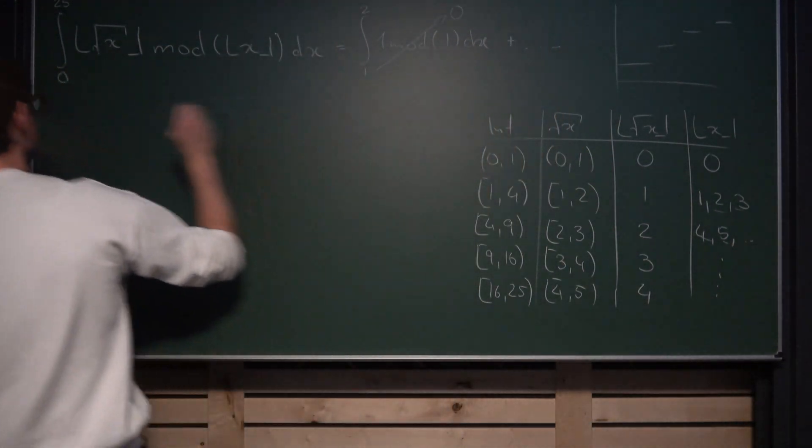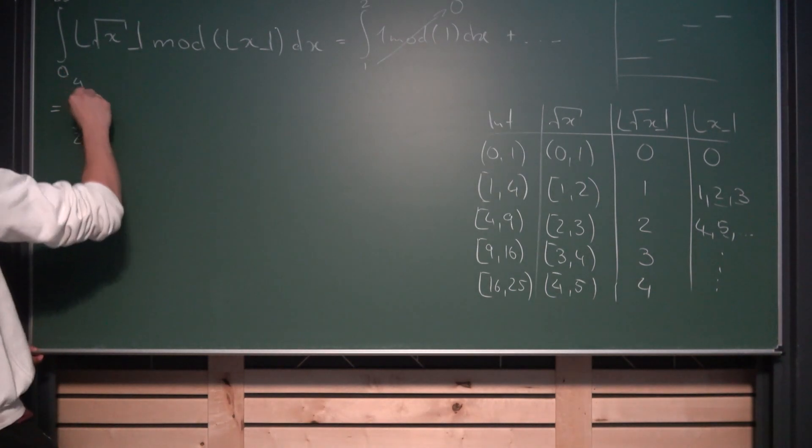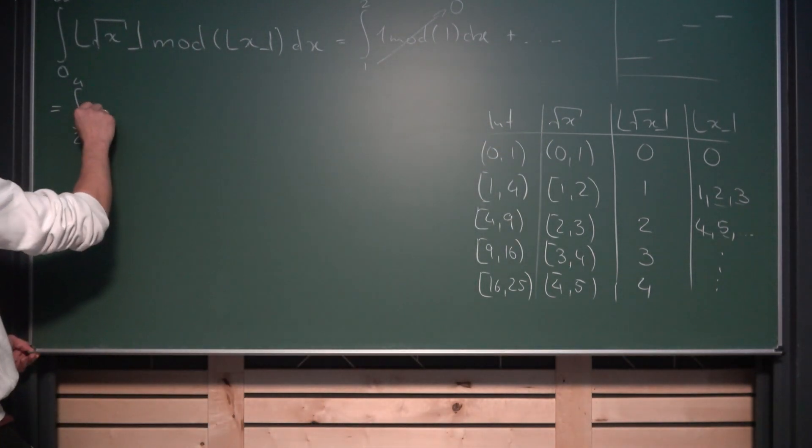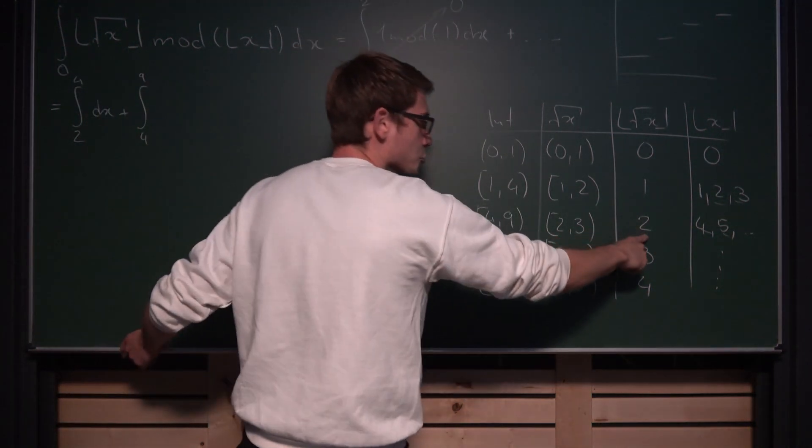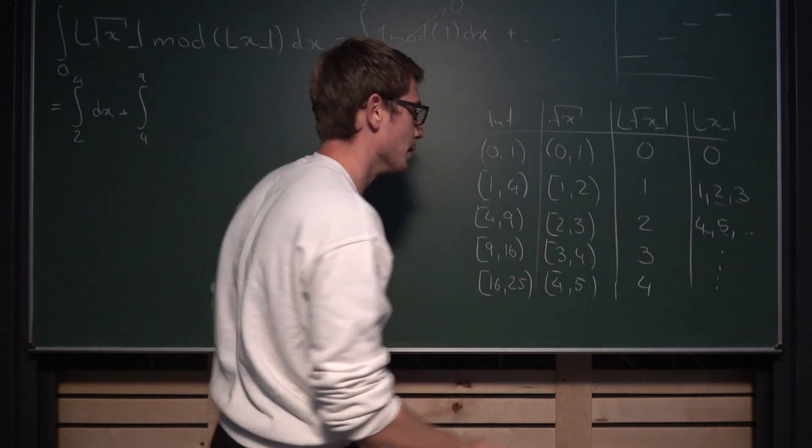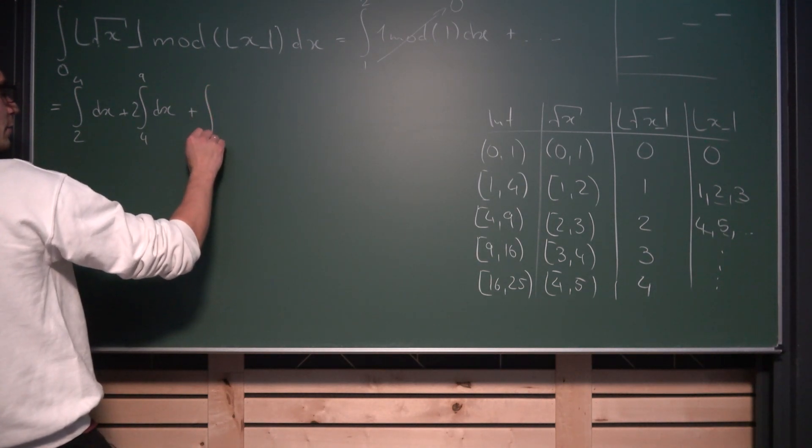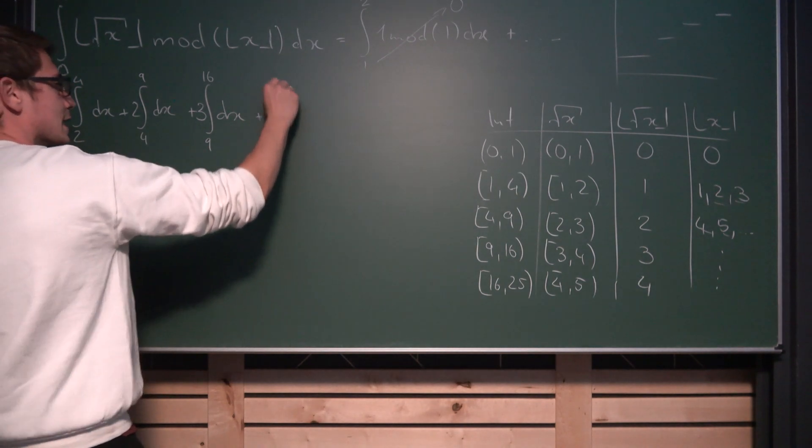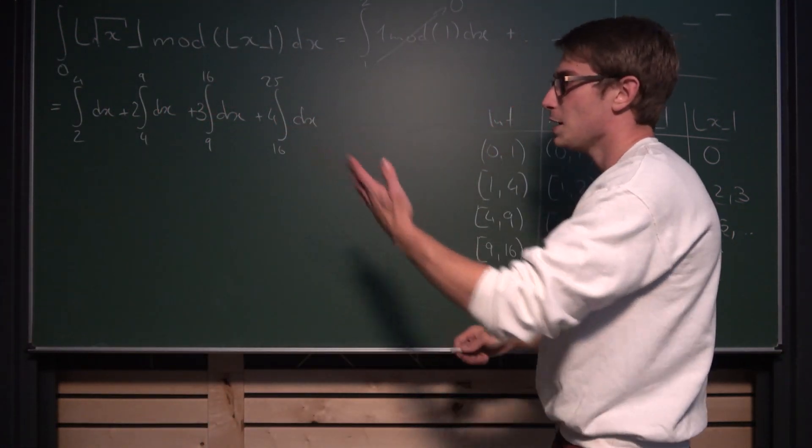Because our integral is just going to be now the integral from, on the first interval we still have left from 2 to 4, of 1, the mod really doesn't matter as we discussed before. So 1 dx plus next interval is from 4 to 9. We are going to get 2 as our floor square root of x. Mod everything bigger than that really doesn't matter. So we can drag the 2 to the front dx and the same argumentation for the rest. We are going to get the integral from 9 to 16 and we are going to get 3 as a constant by the linearity of the integral, dragging it to the front, plus and last but not least, with a 4 here dx, 16 to 25.